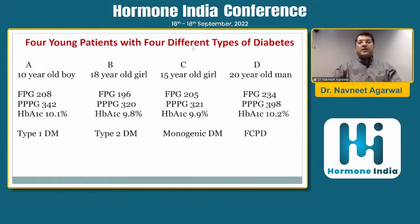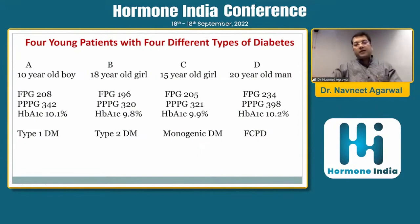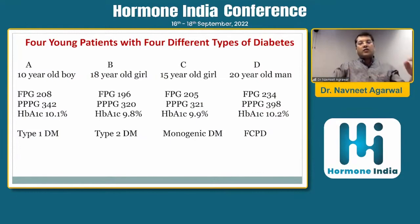Coming back to our four patients with similar FPG, PPG, and A1C: a 10-year-old boy with positive autoantibodies and absent C-peptide is diagnosed as type 1. An 18-year-old overweight girl with markers of acanthosis and family history is type 2 diabetes. A 15-year-old girl with the same glucose values but a three-generation history of diabetes and no peripheral markers of insulin resistance indicates monogenic diabetes. A 20-year-old man with A1C of 10.2, pancreatic calcification, history of steatorrhea, and chronic abdominal pain indicates FCPD.